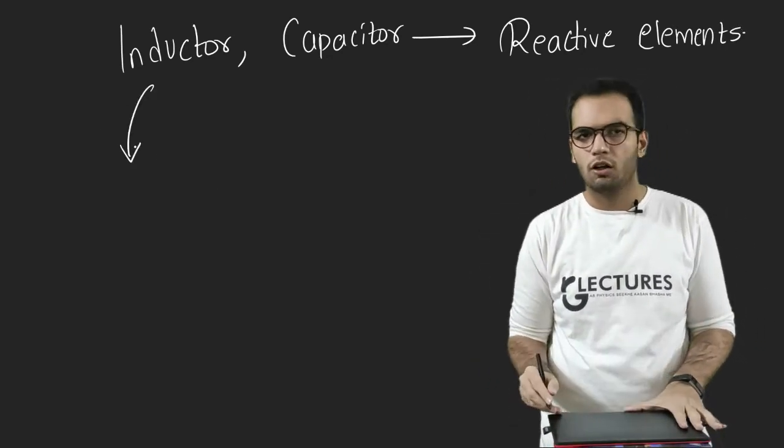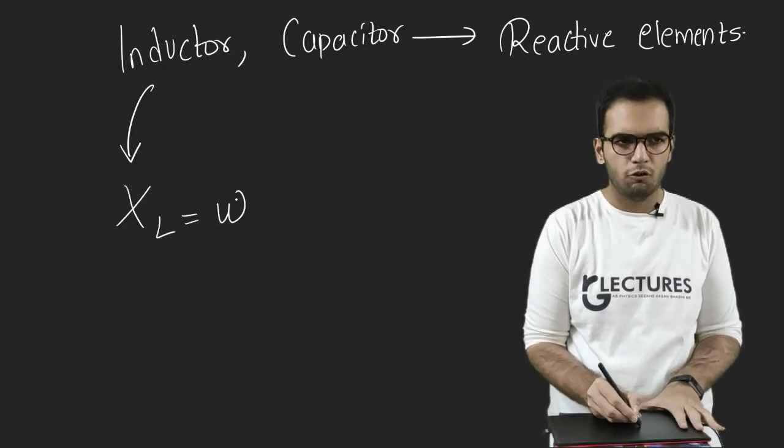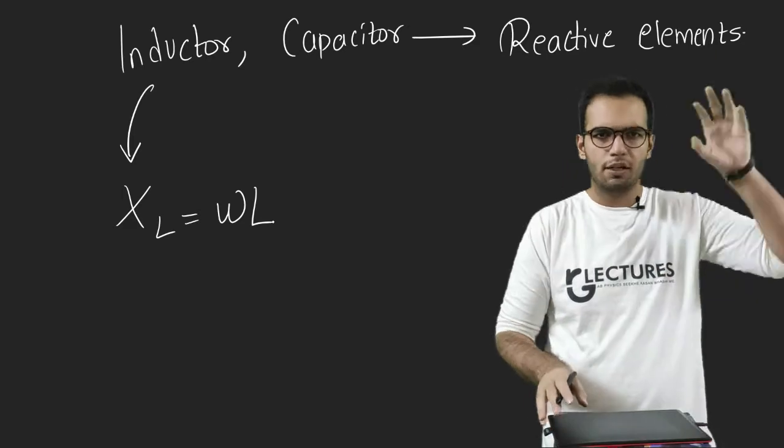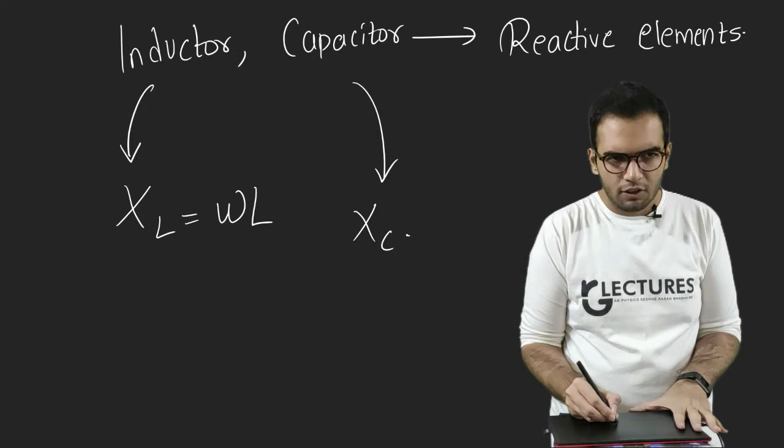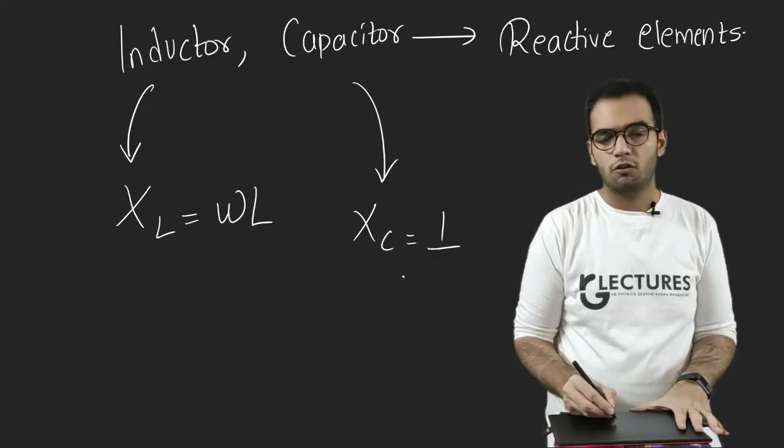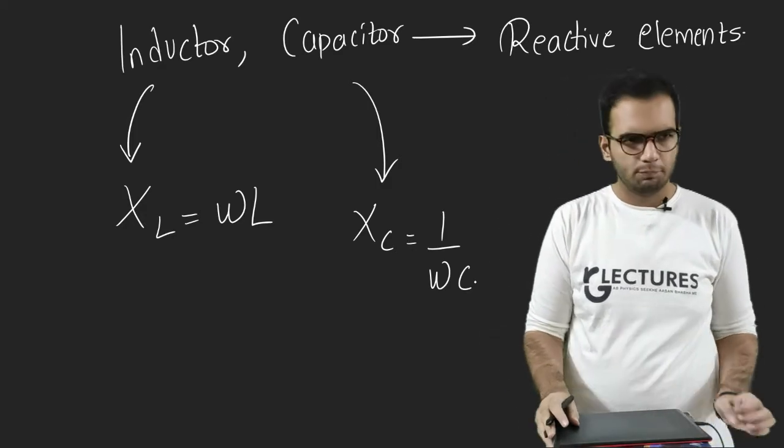For example, the resistance across the inductor is called as XL. And you know its formula is omega L. If you do not know, there will be a video in my playlist which will explain it. If I talk about capacitor, there is a resistance offered by a capacitor. Its formula is given by 1 upon omega C.